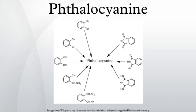Properties. Unsubstituted phthalocyanine, abbreviated H2Pc, and many of its complexes have very low solubility in organic solvents. Benzene at 40 degrees Celsius dissolves less than a milligram of H2Pc or CuPc per liter. H2Pc or CuPc dissolve easily in sulfuric acid due to the protonation of the nitrogen atoms bridging the pyrrole rings.